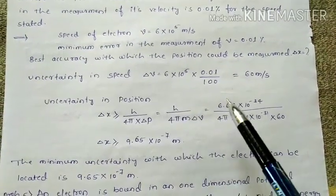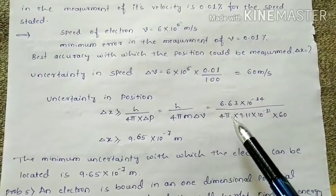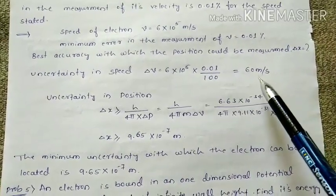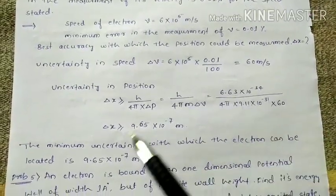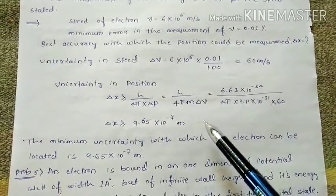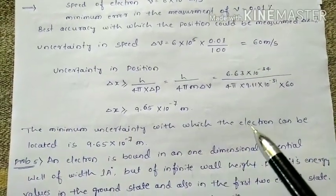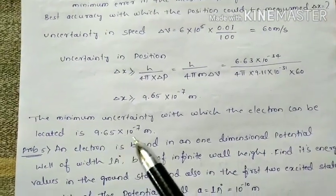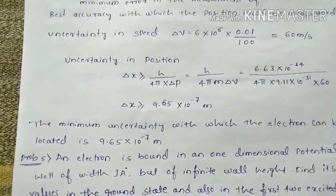Substituting values: h = 6.63×10⁻³⁴, 4π, m = 9.11×10⁻³¹, and delta_v = 60 m/s. After solving, delta_x ≥ 9.65×10⁻⁷ meter. This is the minimum uncertainty with which the electron's position can be located.